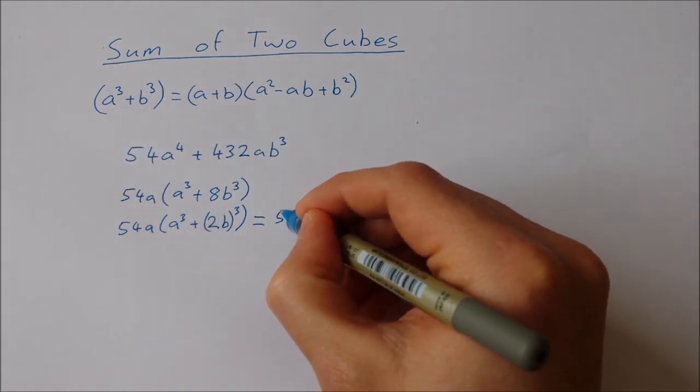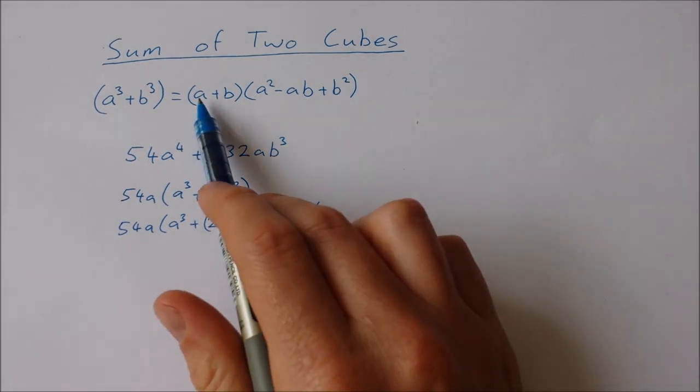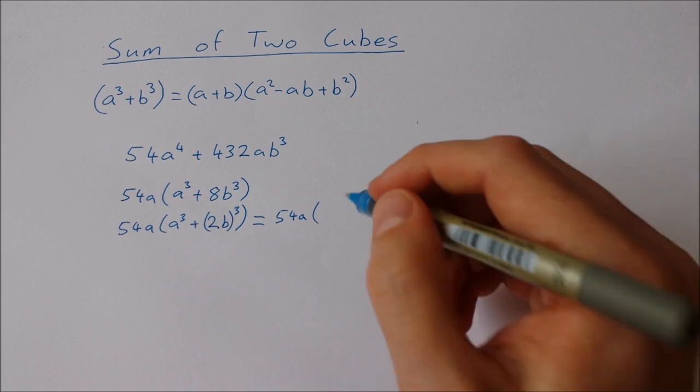So I'll have 54a outside the brackets, and then I'll have the first plus the second, so that's a plus 2b.